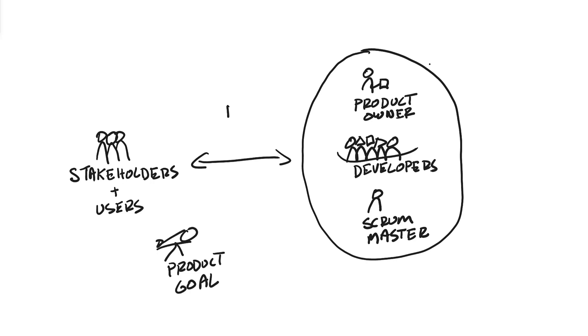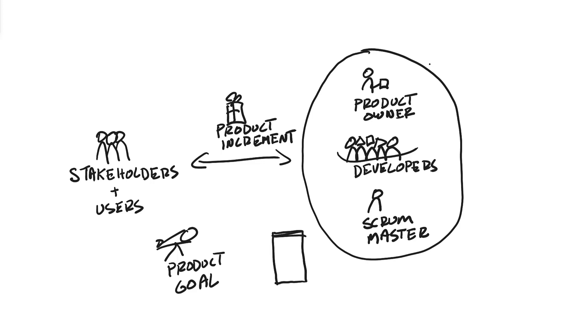The Sprint Review is about getting feedback from the stakeholders and users on the product increment, and then adapting the product backlog accordingly.